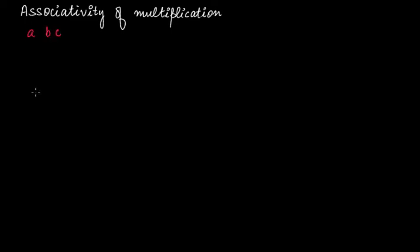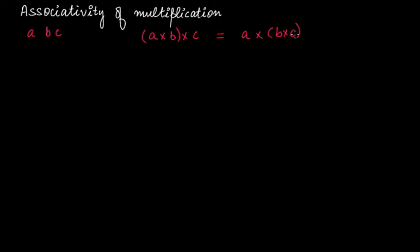Suppose you have three integers a, b, c. These are three integers and let's say a times b is grouped together and then times c, and the second condition is a times b times c where b and c are grouped together. If this first condition where a and b are grouped together for multiplication is equal to the second condition where b and c are grouped together, then we'll say that the multiplication of integers are associative in nature.